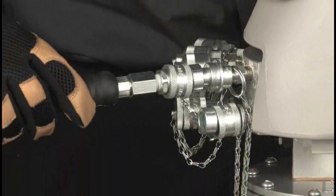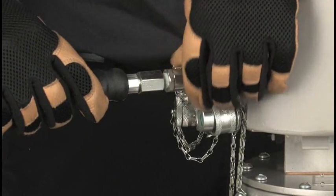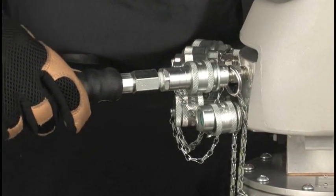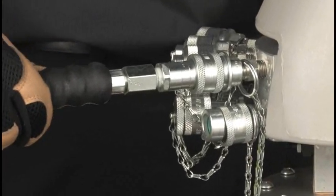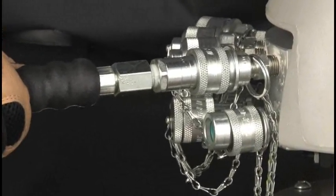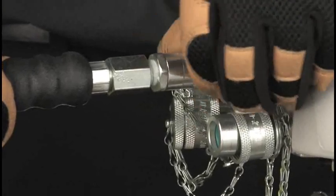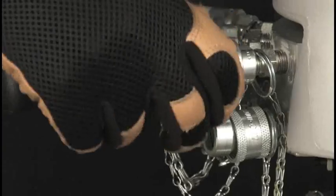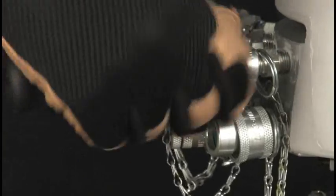The couplers screw together with about three-eighths of an inch thread length, but if they were to loosen even a sixteenth of an inch, the oil would be immediately stopped, protecting the operator from the possibility of a high pressure oil injection. Do not defeat this safety feature by changing or modifying the fittings.